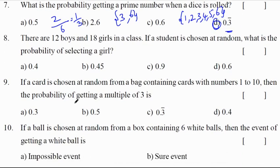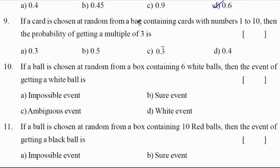There are 12 boys and 18 girls in a class. If a student is chosen at random, what is the probability of selecting a girl? So total number of students are 12 plus 18 is 30. Selecting a girl student is 18. So 18 by 30 is nothing but 0.6. If a card is chosen at random from a bag containing cards with numbers 1 to 10, the probability of getting multiples of 3. So multiples of 3 from numbers 1 to 10 is 3, 6, 9. So favorable outcomes are 3. Total number of outcomes are 10. 3 by 10 is nothing but 0.3. Correct option A.